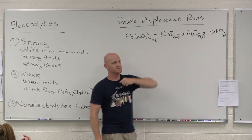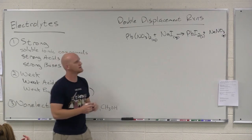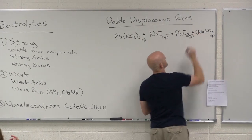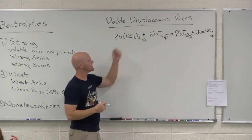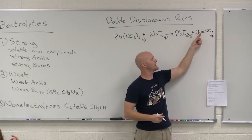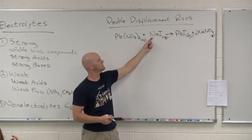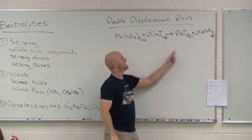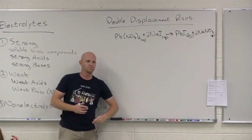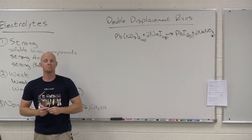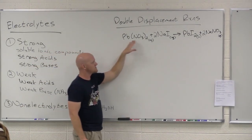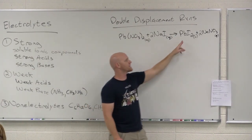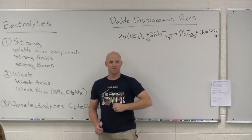To balance: put a two in front of sodium iodide. That balances the nitrates, giving two sodiums, so put a two in front of sodium nitrate. Now there are two iodides, one lead on each side — balanced. Given two ionic compounds, you should recognize it as a double displacement reaction, predict the products with proper formulas, and balance.